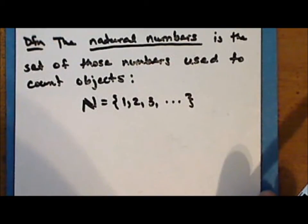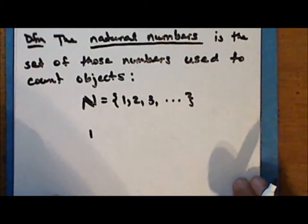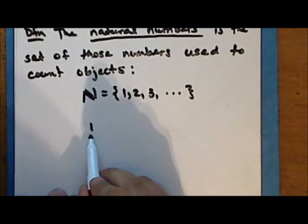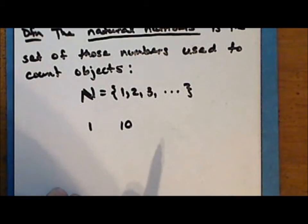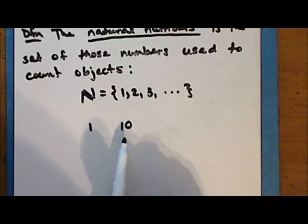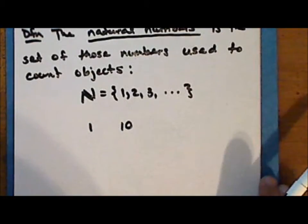Rather, 0 was a symbol used as a placeholder to indicate the value of certain numbers. For instance, today we use a positional number system where we can make the distinction between a single object and 10 of those objects simply by using a symbol which denotes a place value. So the natural numbers do not include 0 — they include those numbers that we use to count objects that exist. We always begin counting with 1. Much later, the concept of 0 as consisting of nothing and as a number which does not change the value of a sum came much later.